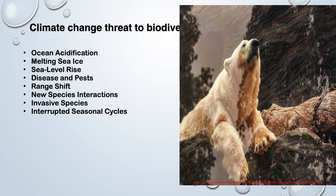Melting sea ice: Arctic temperatures are rising twice as quickly as the rest of the world and sea ice is melting at an alarming rate. Some of the world's iconic species like polar bear, ringed seal, and whale are experiencing distinct pressure due to melting sea ice. For these and other species, disappearing sea ice disrupts the food chain, hunting habits, reproduction, protection from predators, and the ability to travel long distances — in other words, the foundation of their existence.